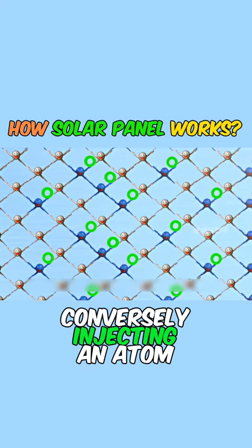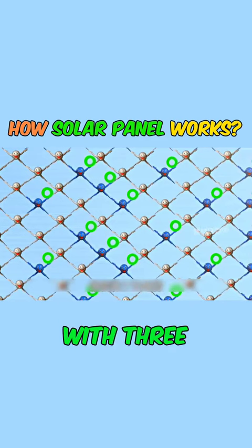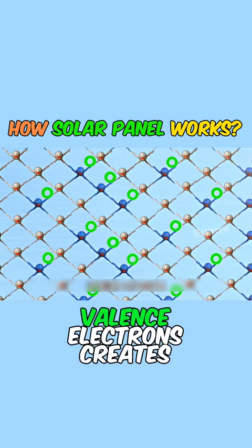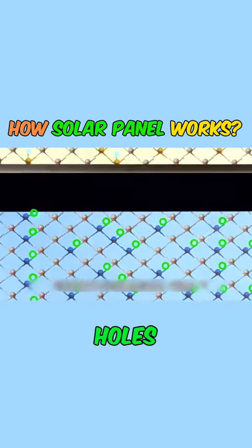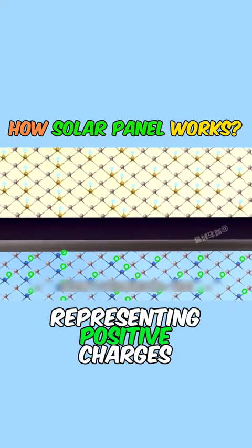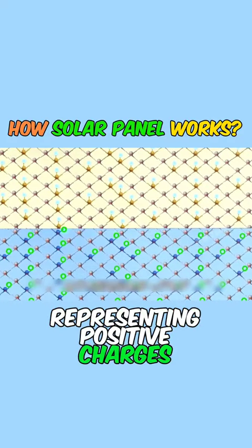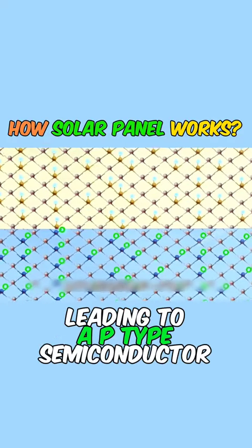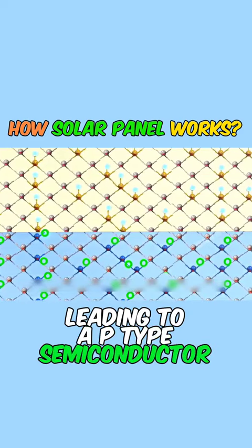Conversely, injecting an atom with three valence electrons creates holes, representing positive charges, leading to a P-type semiconductor.